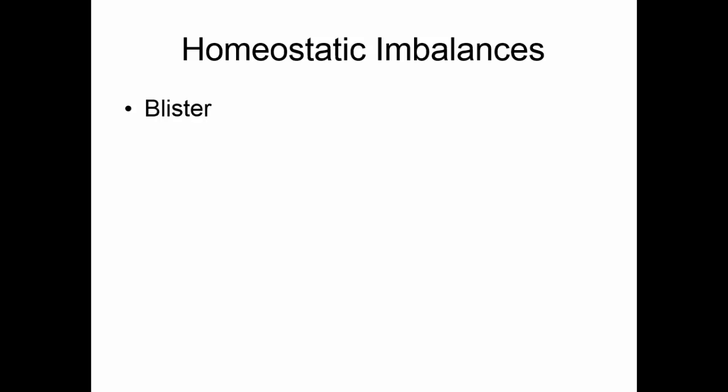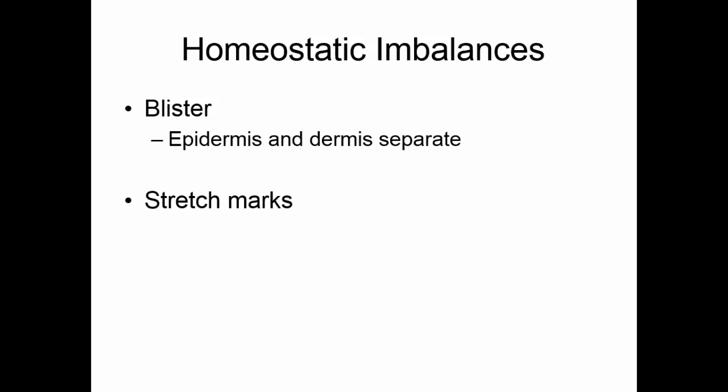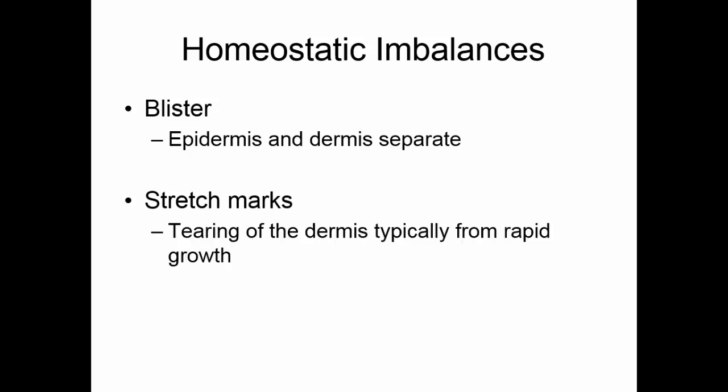A couple of things can happen on the surface of the skin. If there is friction, a blister may form — the epidermis is pulled away from the dermis and fluid collects between the two. Stretch marks occur if the skin tries to grow too fast. The dermis may tear, and the tear fills in with scar tissue. Scar tissue is white, so rapid stretching of the dermis can cause stretch marks to occur.